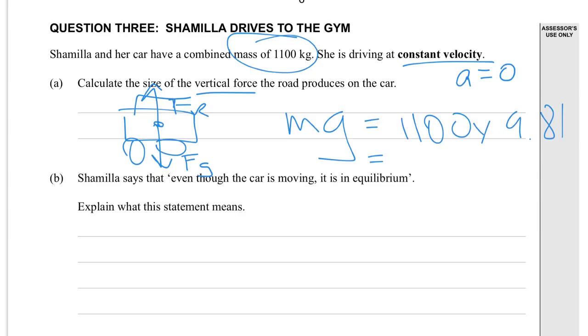B. Shamila says that even though the car is moving, it is in equilibrium. Explain what this statement means. Equilibrium means that all the forces, the net force, is zero. So all of the forces are balanced. And the torque is also zero.